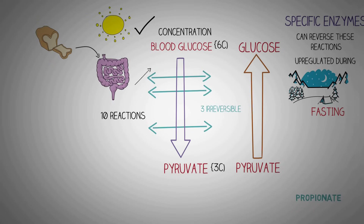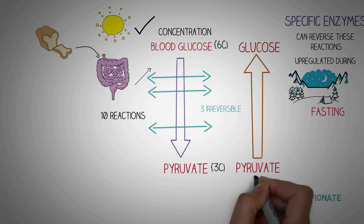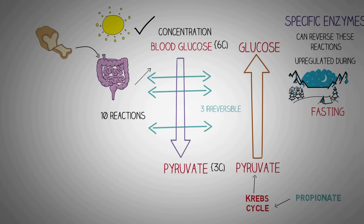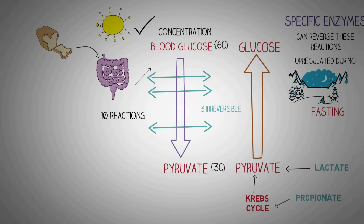Other substances like propionate are first converted to intermediates of the Krebs cycle, which then get converted to pyruvate. Substances like lactate are first converted to pyruvate directly, which then converts to glucose later.